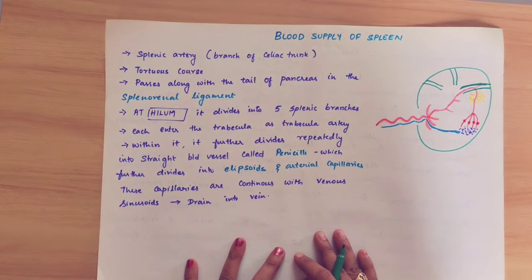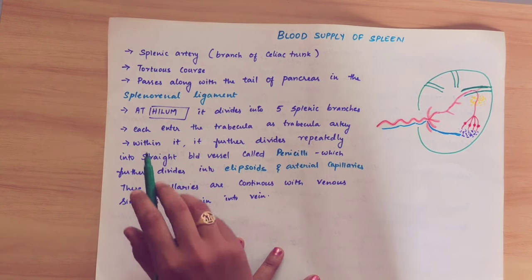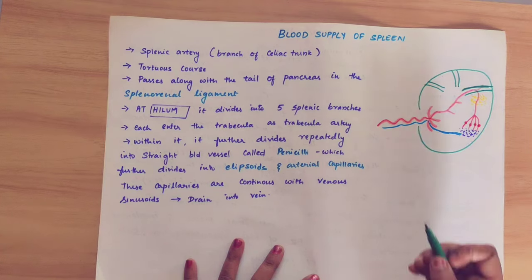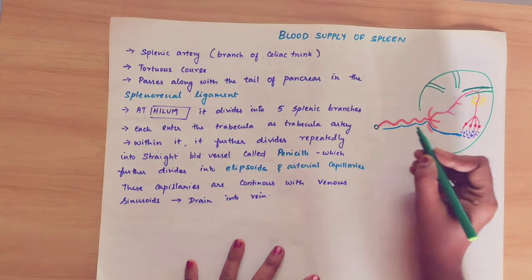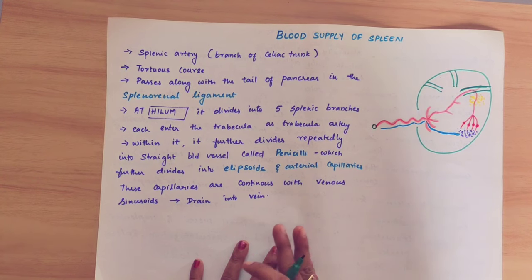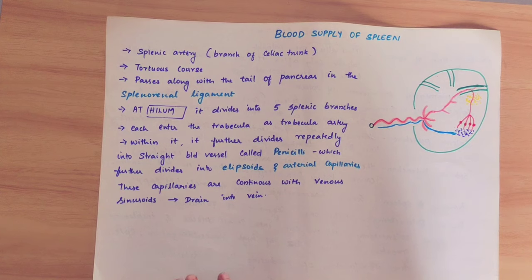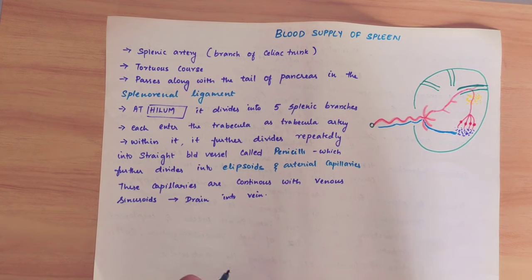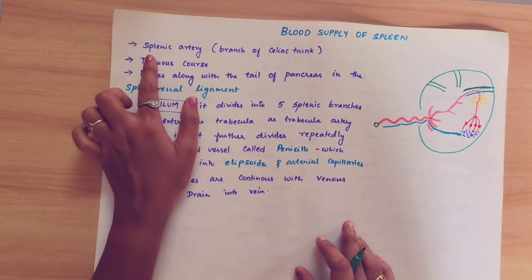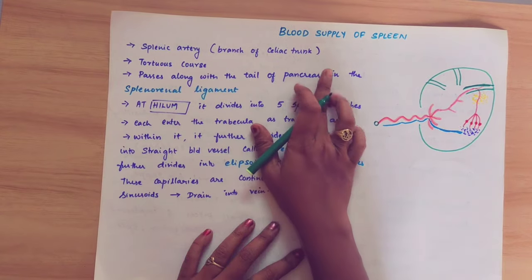Now we will see the blood supply of the spleen. The blood supply of the spleen is the splenic artery. The splenic artery is one of the branches of the celiac trunk. The celiac trunk is an anterior branch of the abdominal aorta. There are three branches: the gastric artery, the hepatic artery, and the splenic artery. The largest artery is the splenic artery.